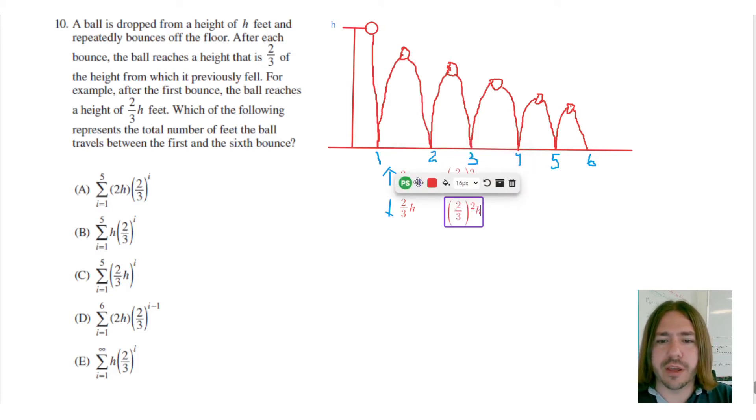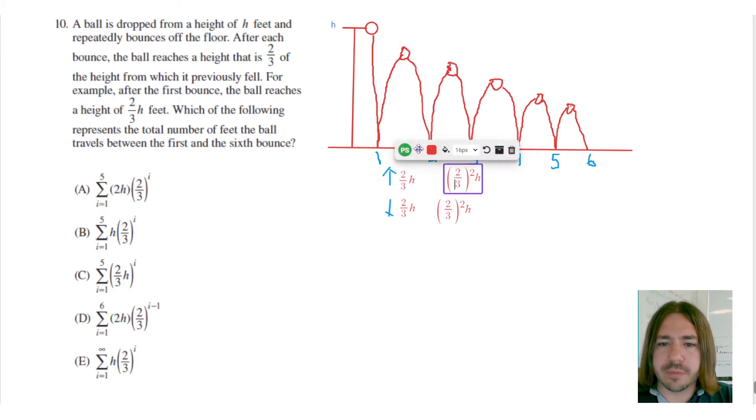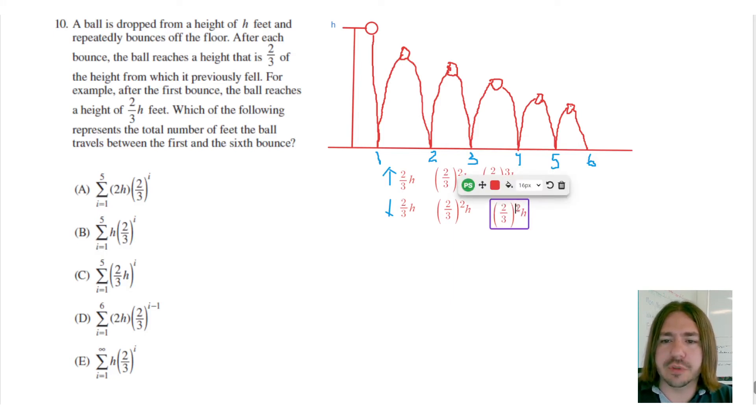Okay, so that's what's happening between bounce two and three. Between bounce three and four, it's going up two-thirds of the previous height. So we're going to multiply that by two-thirds again, and hopefully you can start to see what's happening here: for every bounce, what's changing in terms of how much distance is traveled is this two-thirds just gets multiplied one extra time every time. So that exponent should be increasing by one after each bounce.